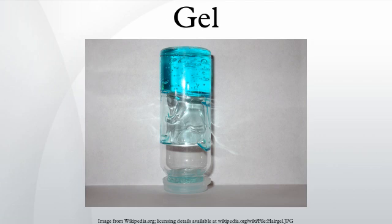Some species secrete gels that are effective in parasite control. For example, the long-finned pilot whale secretes an enzymatic gel that rests on the outer surface of the animal and helps prevent other organisms from establishing colonies on the surface of these whales' bodies. Hydrogels existing naturally in the body include mucus, the vitreous humor of the eye, cartilage, tendons, and blood clots.